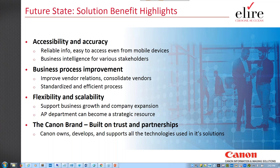Flexibility and scalability are very important — as businesses grow through acquisition or organic growth, you need a solution that can grow with you without having to replace it. The AP department becomes a strategic resource throughout your company. Canon is a Fortune 500 company — we develop and support all our technologies ourselves. Our OCR technology, a leader in the industry worldwide, has over 3,000 customers globally, and we look forward to helping each of you with AP invoice process automation.